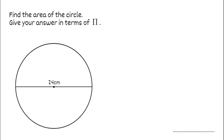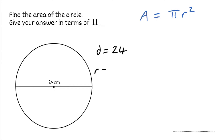We're going to do the same for this question. We need to find the area of the circle, again giving our answer in terms of pi. So we've got our formula — the area is equal to pi multiplied by the radius squared. But this question's a little different. This time we don't have the radius. We're given that the diameter of the circle is 24. So if the diameter is 24, we need to find the radius, and all we have to do is divide the diameter by 2. So 24 divided by 2 gives us a radius of 12.